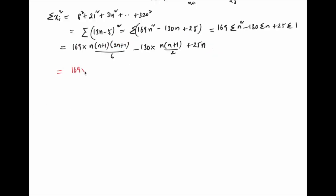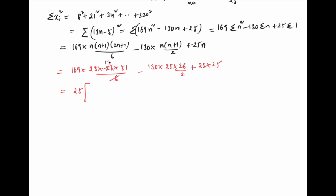We have 169 × (25 × 26 × 51)/6 − 130 × (25 × 26)/2 + 25 × 25. Taking 25 as common factor and simplifying: 169 × 13 × 17 − 130 × 13 + 25. Upon calculation, Σxᵢ² = 35,684.